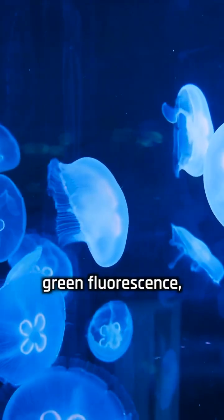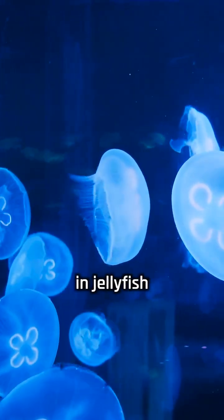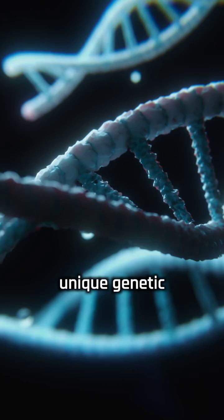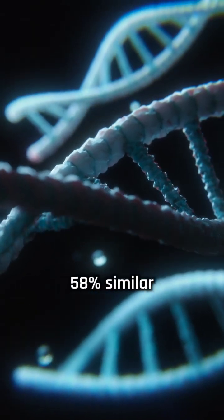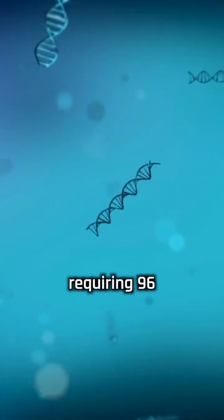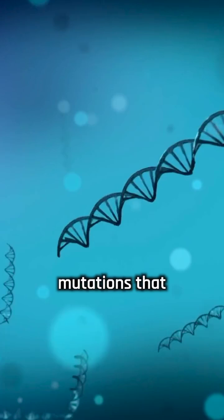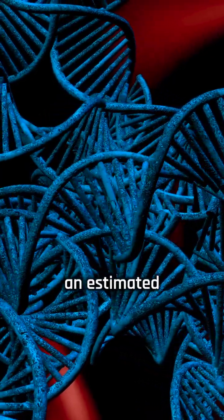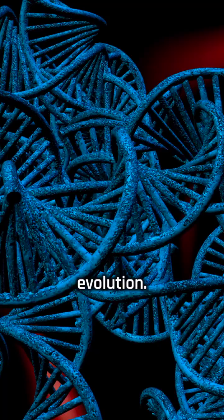This protein, which exhibits green fluorescence similar to proteins found in jellyfish and corals, boasts a unique genetic sequence only 58% similar to the closest known fluorescent protein. The remaining sequence is entirely unique, requiring 96 different genetic mutations that would have taken nature an estimated 500 million years to achieve through evolution.